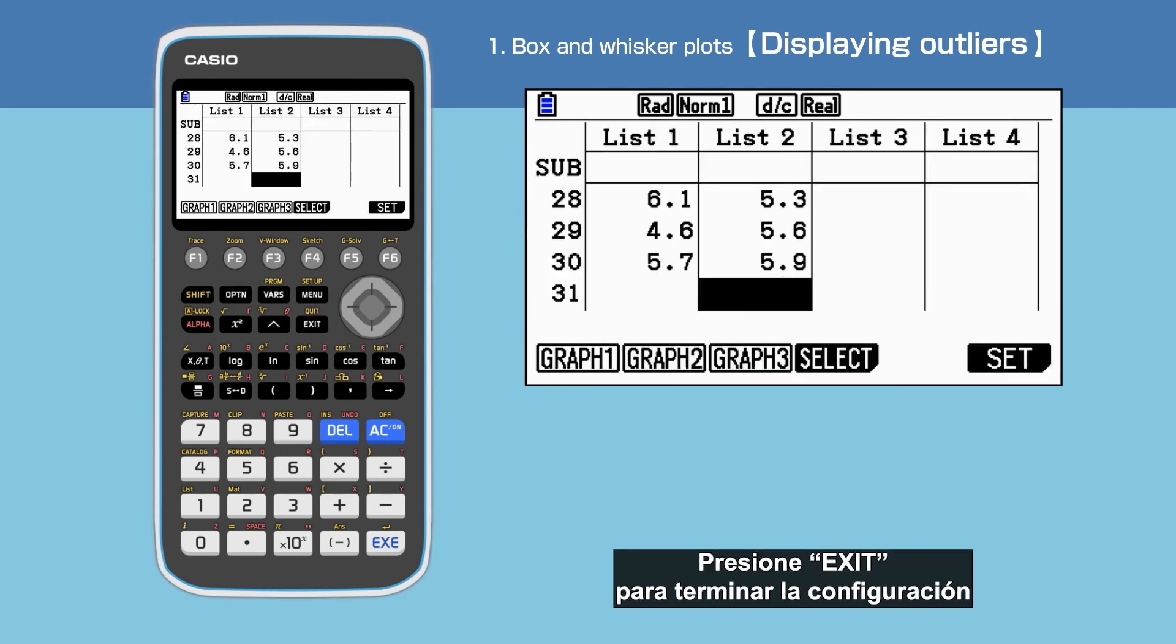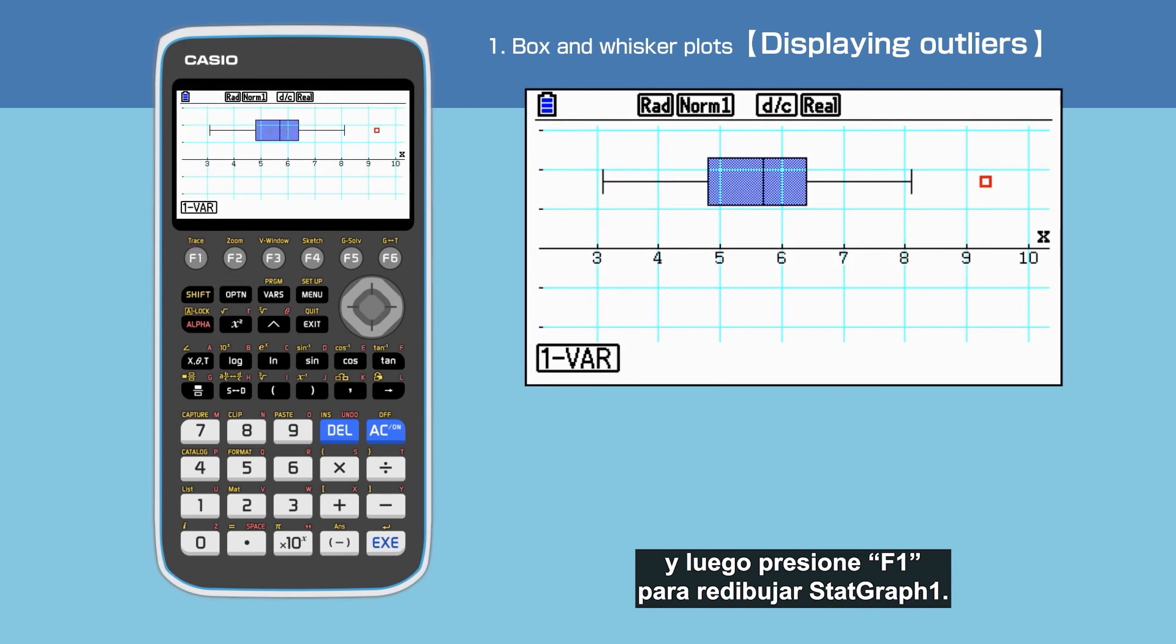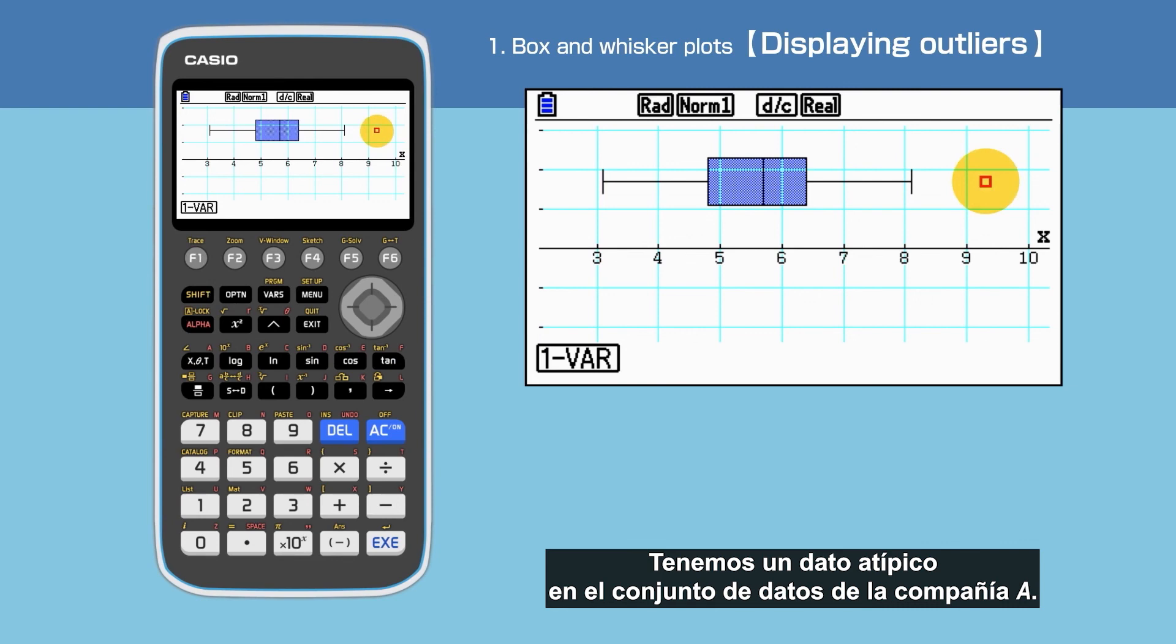Exit to end setting, then press F1 to redraw the Stat Graph 1. We have an Outlier for the dataset A.